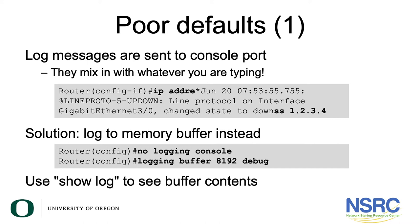For example, you can be in the middle of typing an IP address as shown on the screen and then a log would pop up on the screen in between your commands. A solution to this is simply sending all logs to a memory buffer instead. You can do so by typing the command 'no logging console' followed by the command 'logging buffer 8192'. The 8192 is the size of the buffer, followed by the debug command. After this, you can show all the logs by typing the command 'show log' at the prompt to see the buffer contents.